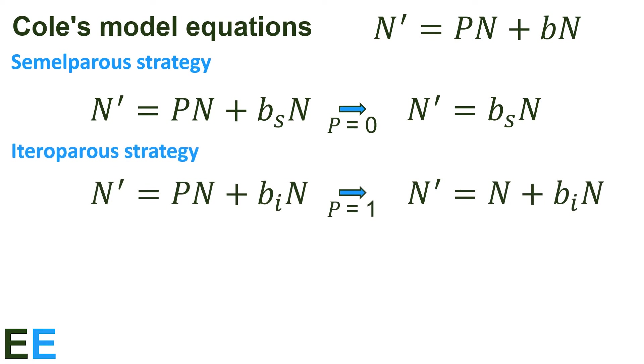Now the iteroparous strategy, with the birth rate represented by B sub i, the birth rate for the iteroparous individuals. To keep things simple, and because mortality for many adults is low from year to year, we'll set the value of p to be 1. This gives us n prime equals n plus B sub i times n, which we can rearrange to n prime equals 1 plus B sub i in parentheses times n.